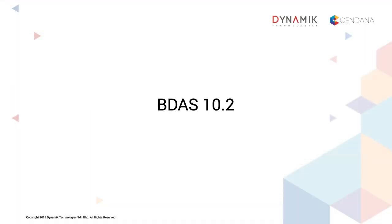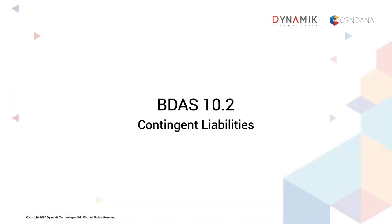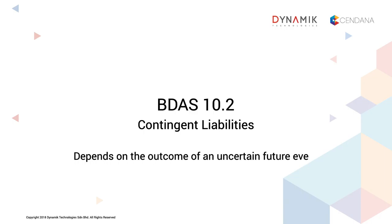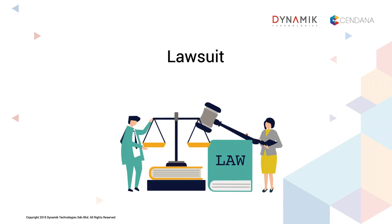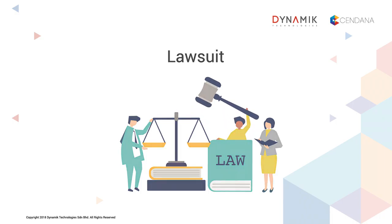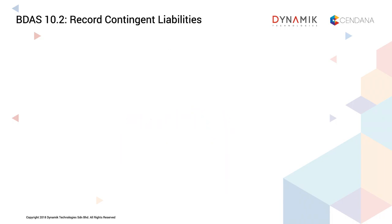Next is B-10.2, Contingent Liabilities, where it depends on the outcome of an uncertain future event. Lawsuits are common examples of contingent liabilities because the outcome is uncertain.